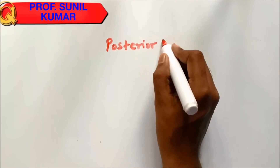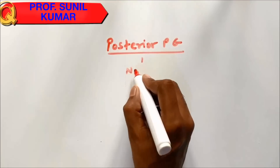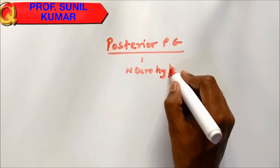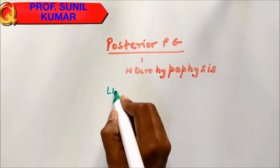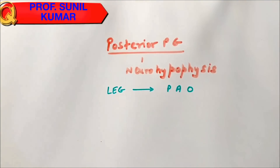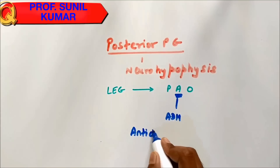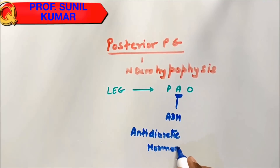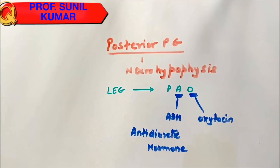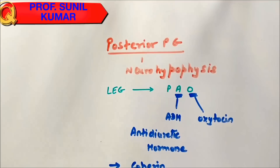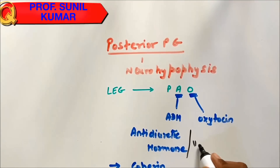The posterior pituitary gland, also called neurohypophysis, we call it LEG — 'pow'. P is for ADH, anti-diuretic hormone, and O is for oxytocin hormone. Anti-diuretic hormone is also called vasopressin.